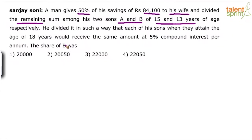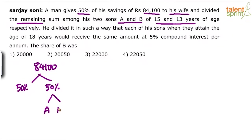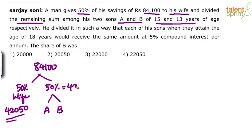Out of 84,100, 50% has gone to the wife and 50% is divided between the sons A and B. So how much is the 50%? 50% of 84,100, which is 42,050. So 42,050 is gone to the wife. What is remaining? Another 42,050. Now, this 42,050 has been divided between A and B.